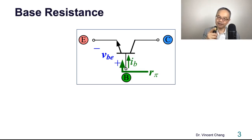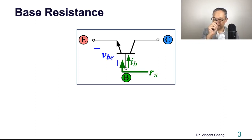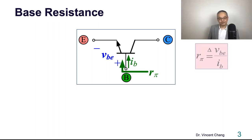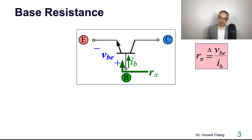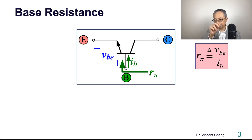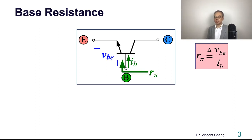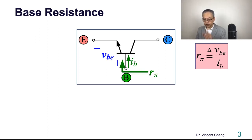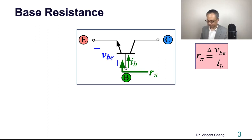If you are looking into the base, then it's called R-pi. R-pi is the base resistance, but a complete description for R-pi should be: the resistance between base and the emitter, yet looking into the base.